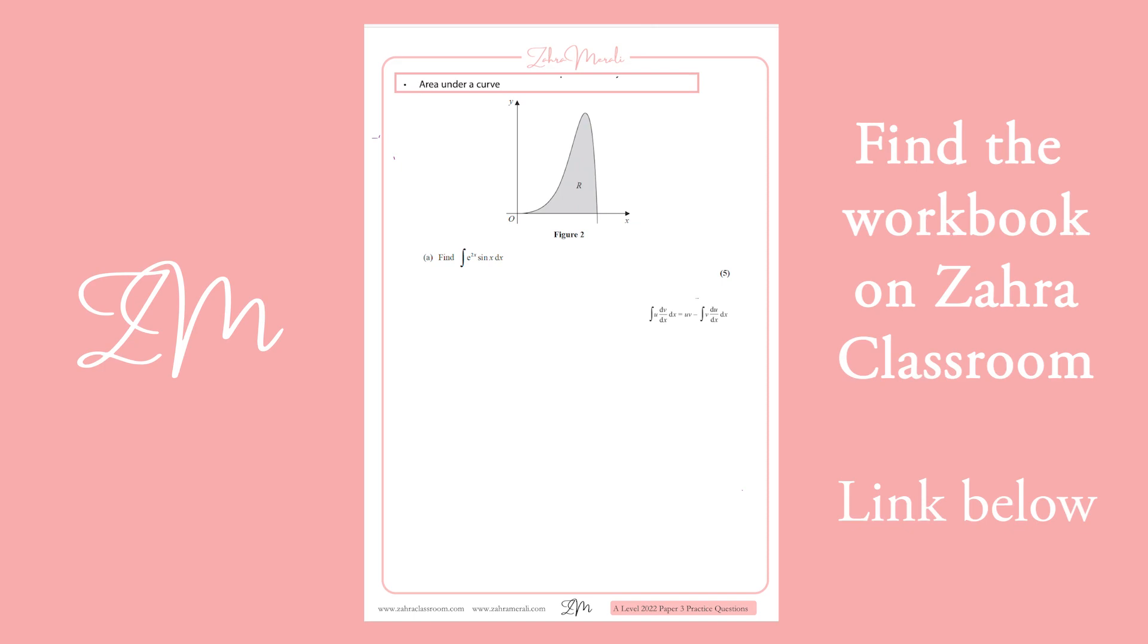So if we've got e to the 2x sine x, we're going to use integration by parts. Normally when we do integration by parts, if there's ln x that takes priority, and then there's an x to the n. Here it doesn't seem obvious, so it doesn't actually matter in this case which one you take as u and which one you take as v dash.